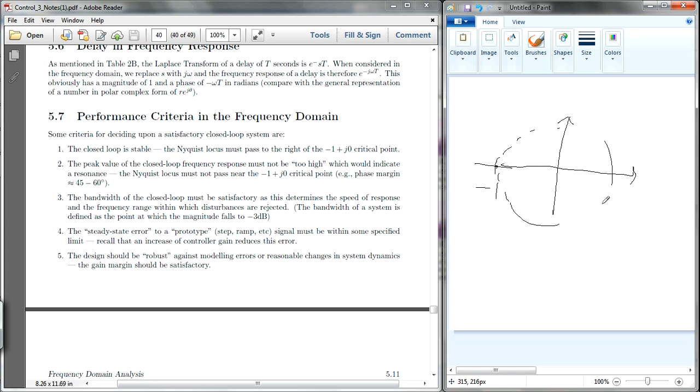So this is the radius. It must pass to the right side of the Nyquist locus, so it must be all around this plane. And then the peak value of the closed-loop response must not be too high. So make sure you know this. This is very important. This is performance criteria, you must remember.